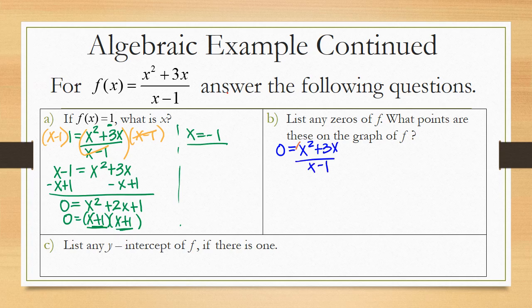Again, I'm going to multiply both sides by x minus 1. And when I do that, 0 times x minus 1 is 0. And I'm left with x squared plus 3x on the right-hand side.